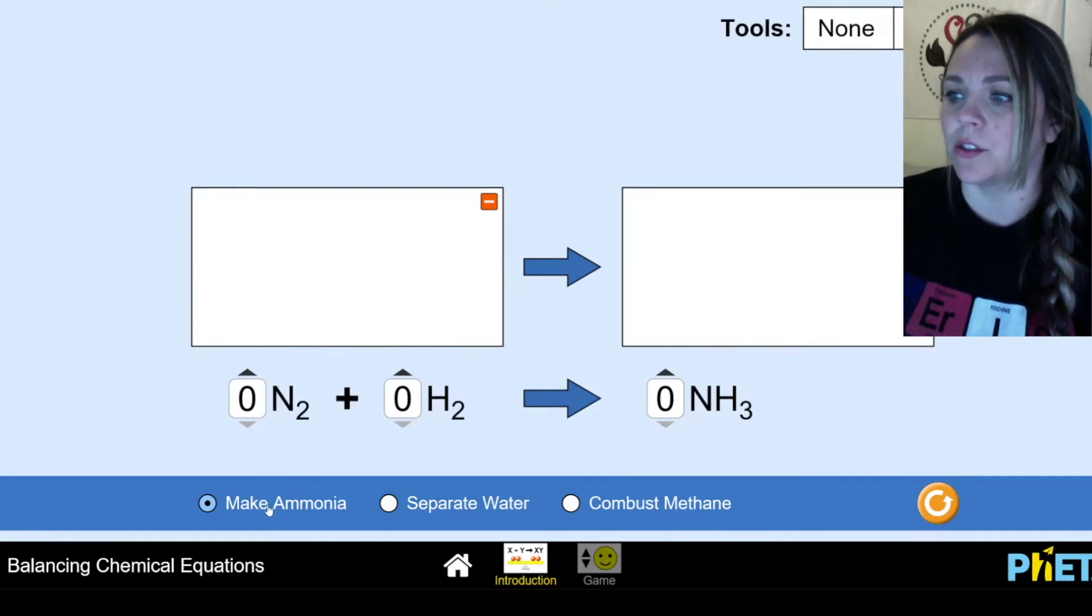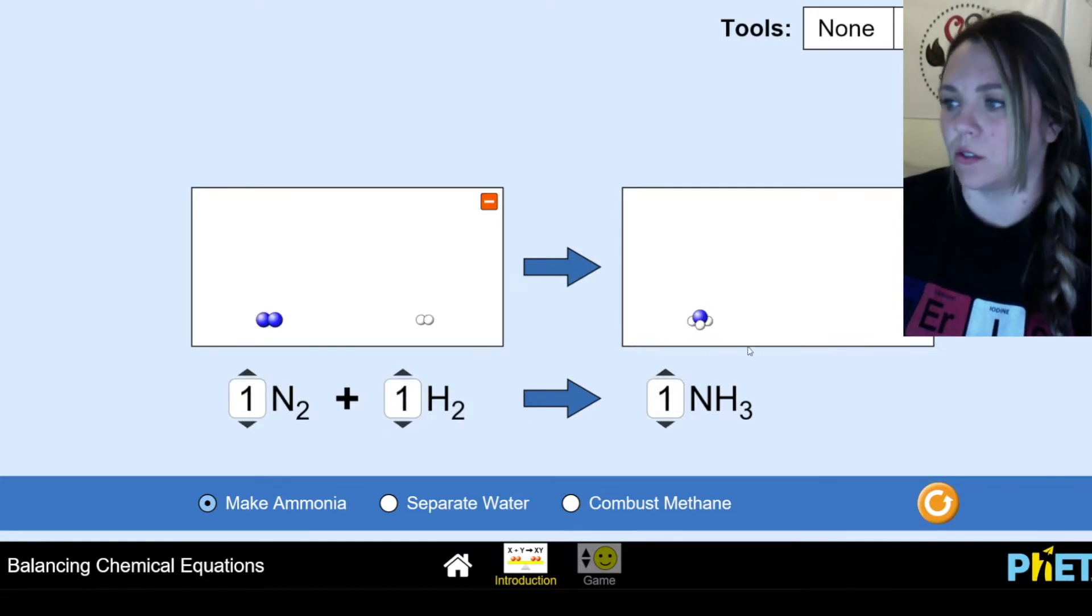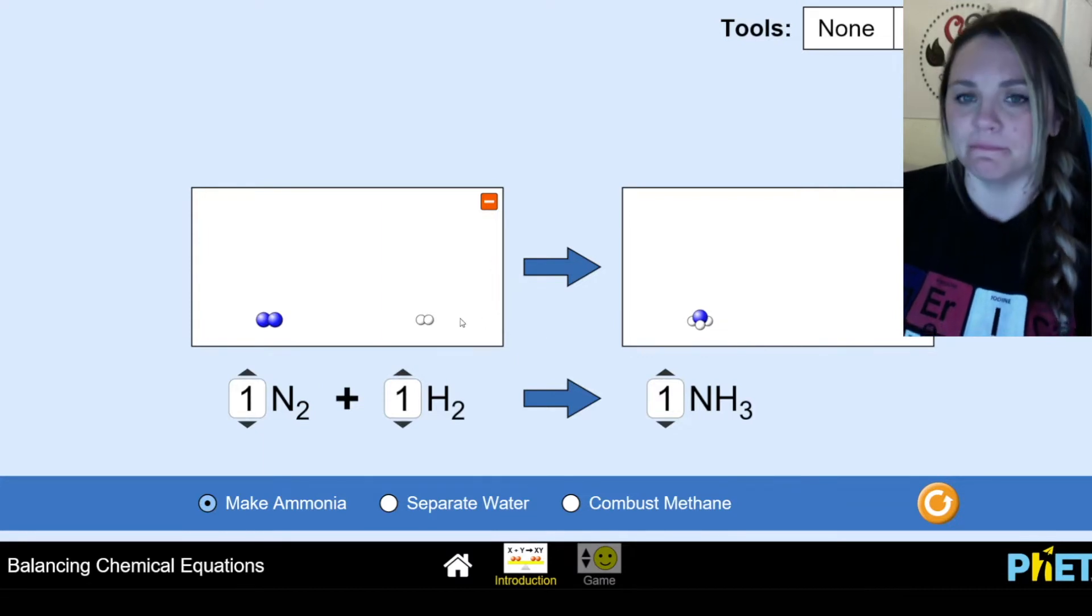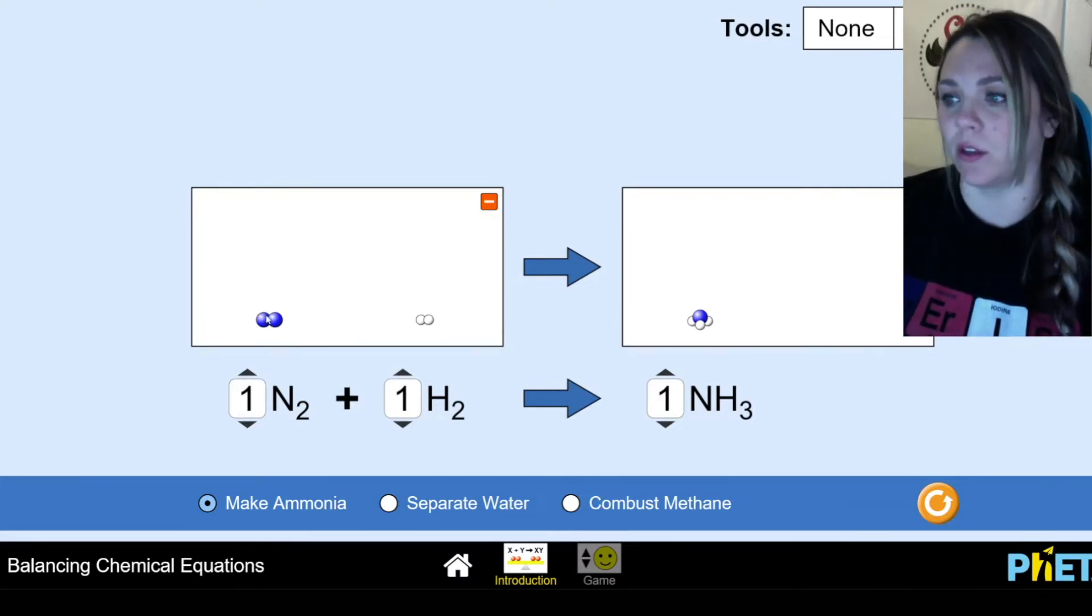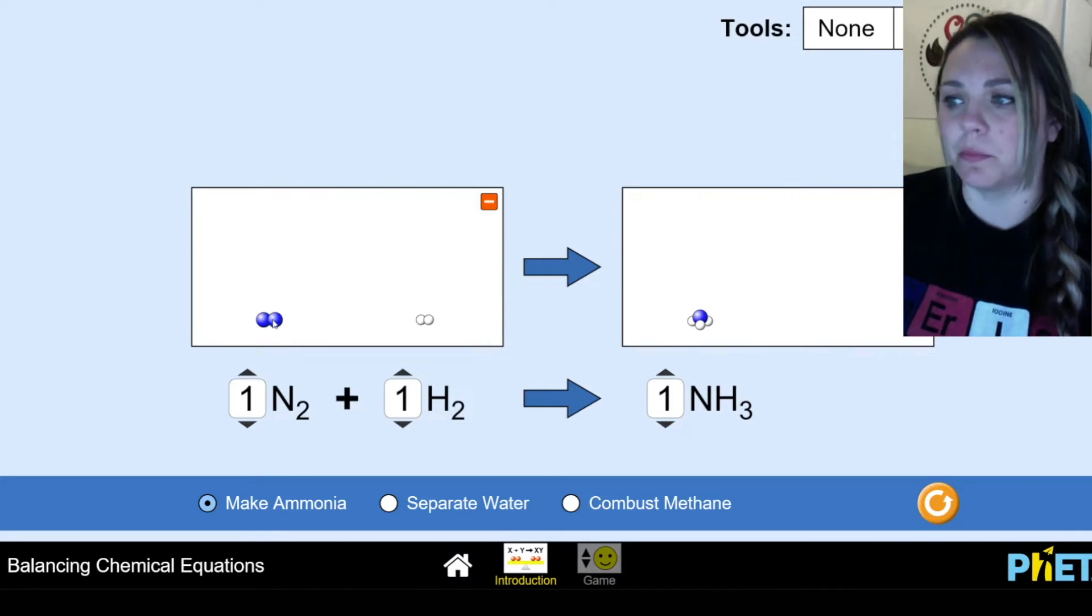There's three different things you can do. You can make ammonia, separate water, or combust methane. We'll start with this one. And first thing you do on any of these pages is start with one of everything, so you can see it all. If you're just starting out with balancing equations, really easy way to look at it is here's the box of reactants and they're reacting to make the box of products. It puts the little molecules for you which is really nice because you can literally count.